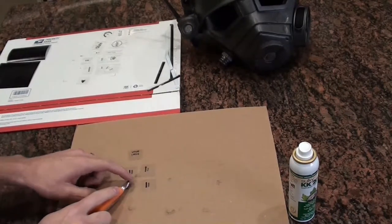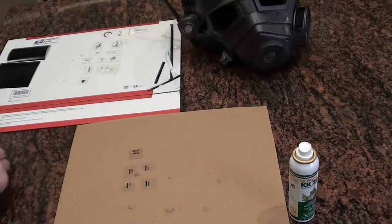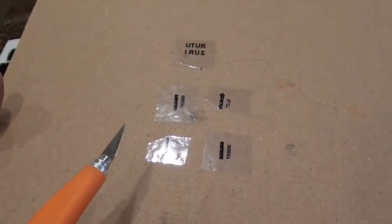Also for the two decals with the arrows and the word slot, if you cut an angle above the arrow, it makes it a little easier to apply to the helmet.